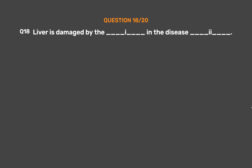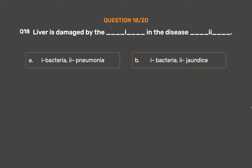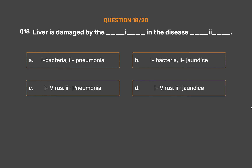Question number 18. Liver is damaged by which microorganism in which disease? Option A: Bacteria — pneumonia. Option B: Bacteria — jaundice. Option C: Virus — pneumonia. Option D: Virus — jaundice.